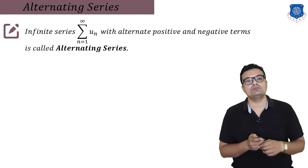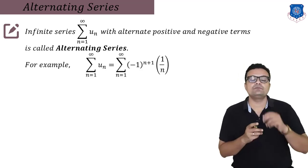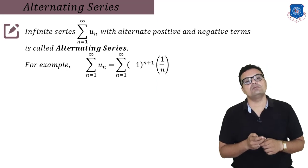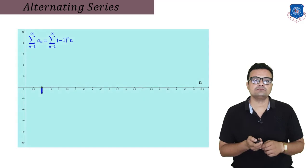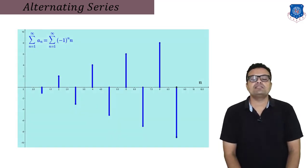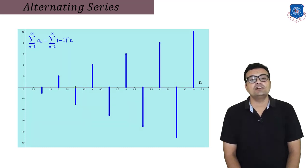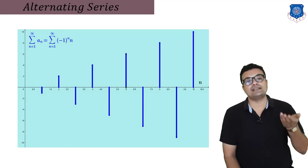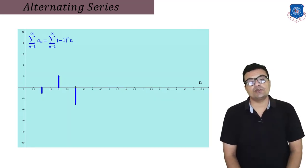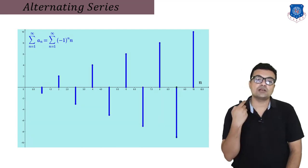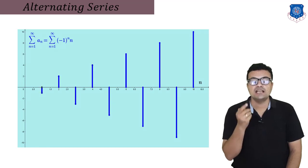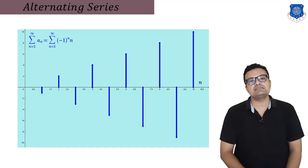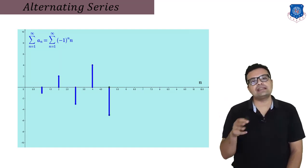The word 'alternating' refers to the sign of the term based on the index n. For example, the summation from n equals 1 to infinity of u_n can be defined as (-1)^(n+1) times (1/n). Graphically, positive terms are shown as blue bars above the x-axis, while negative terms are bars below the x-axis — meaning we now handle both positive and negative term series simultaneously.